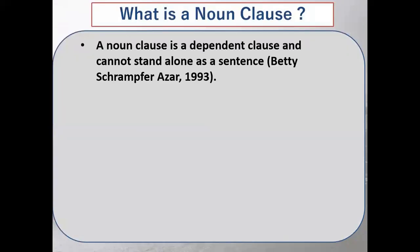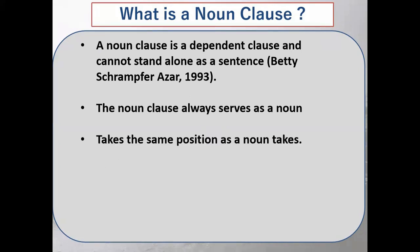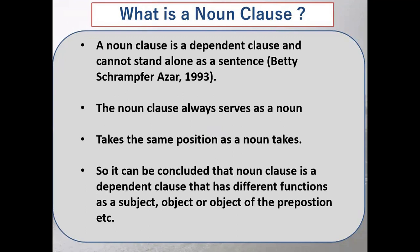Let's conclude. A noun clause is a dependent clause and cannot stand alone. It always serves as a noun and takes the same position as a noun. A noun clause is a dependent clause with different functions — those can be subject, object, object of a preposition, subject complement, or object complement — which we will discuss in our upcoming videos. Thank you, and do practice. Practice is the most important condition to understand this easily.